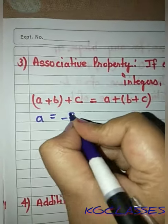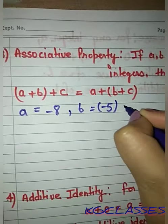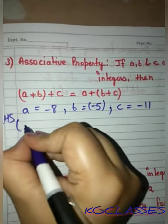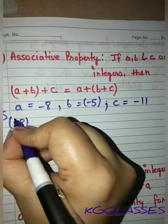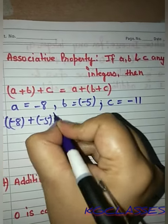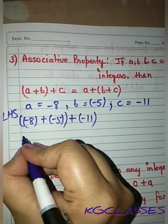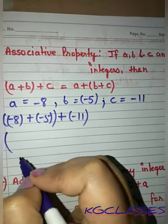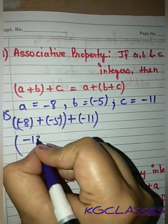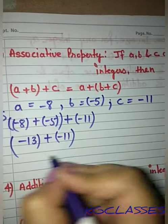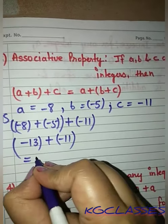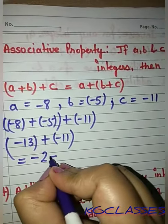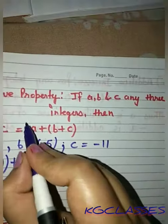Let's take values: a, b, and c. We have values such that working through the left-hand side with b as minus 5 and c as minus 11. According to the BODMAS rule, since both are negative, we add them: 13 plus 11 gives us 24. So the left-hand side equals 24.